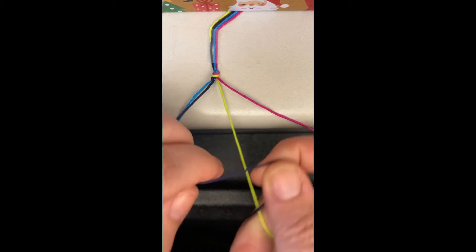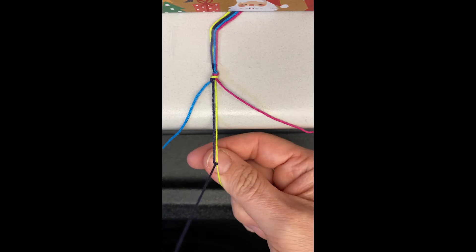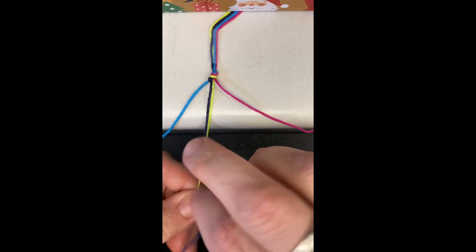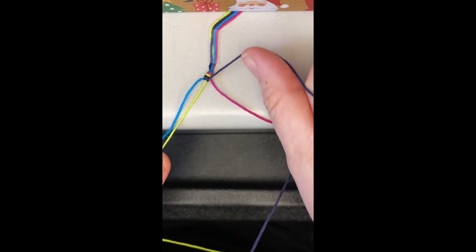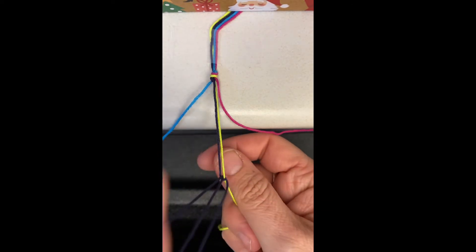Make the same knot twice over each color. Continue knotting over each color towards the right until the outermost color has carried over the middle. This will create a pattern.